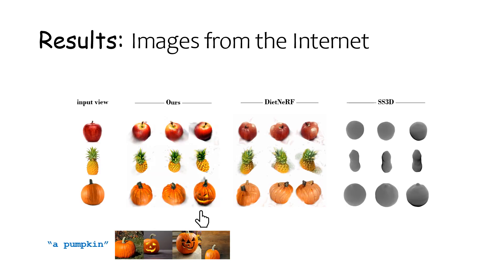Our method also addresses the naturally existing ambiguity in novel view inference, especially for occluded regions in the input view. Such synthesis results are also affected by the 2D distribution from the image diffusion model. For example, when generating images with the text prompt 'a pumpkin' using stable diffusion, half of the generated images are jack-o-lanterns, which causes our synthesized pumpkin to also have the jack-o-lantern face at its back. Here we show more experimental results across all views.